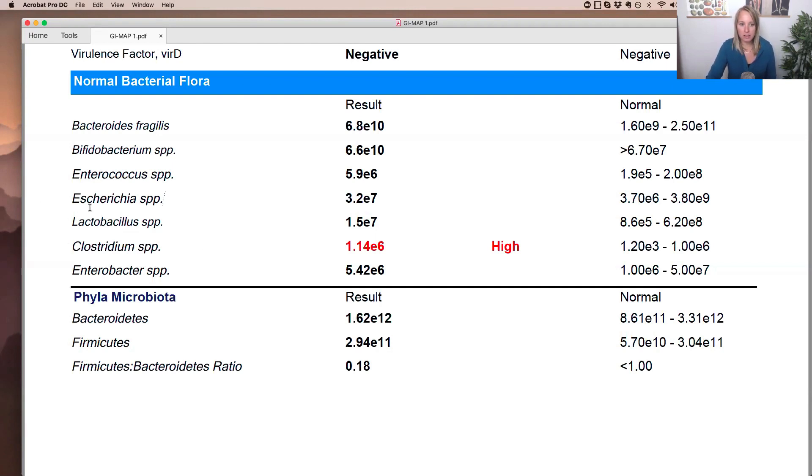Clostridium and Enterobacter are similar. They are also good bacteria, but they do become an issue when they overgrow. So in this case, this person has a bit of a dysbiosis because we're seeing this high clostridium. So this clostridium actually might be outcompeting some of these other beneficial strains.